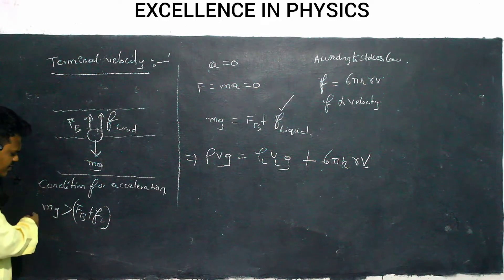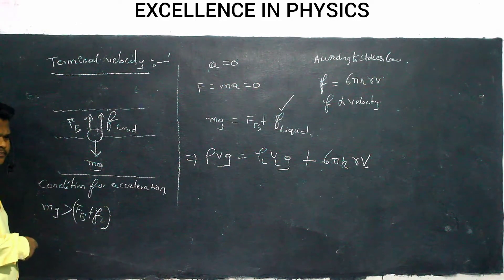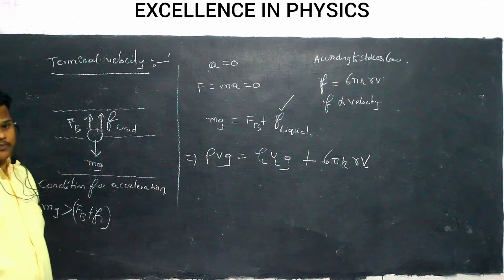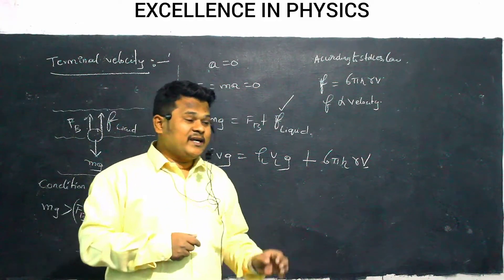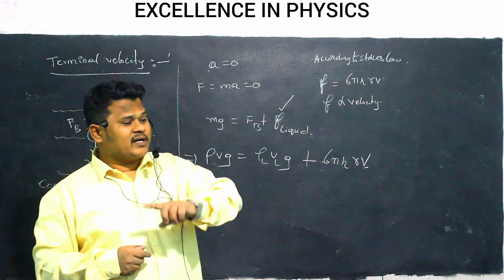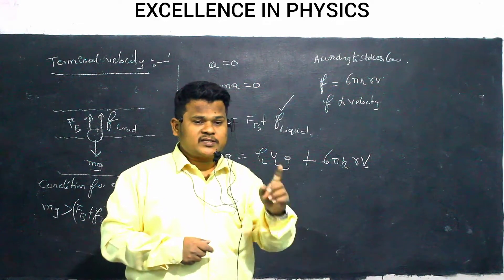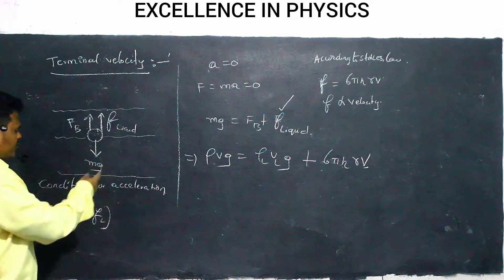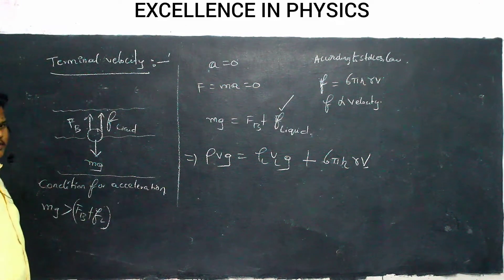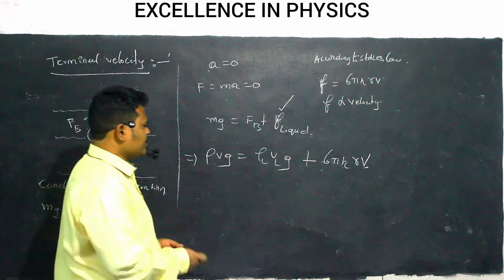At one point, mg becomes equal to the force of buoyancy plus viscous force. At that position, acceleration becomes zero. The velocity does not change — the body continues to travel downward with the same maximum velocity it had gained up to that point.